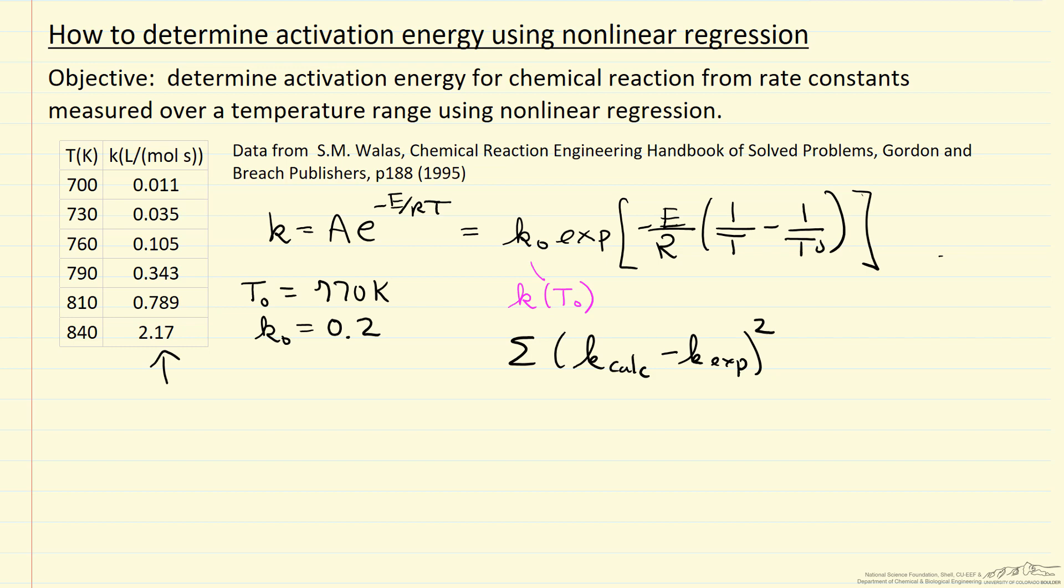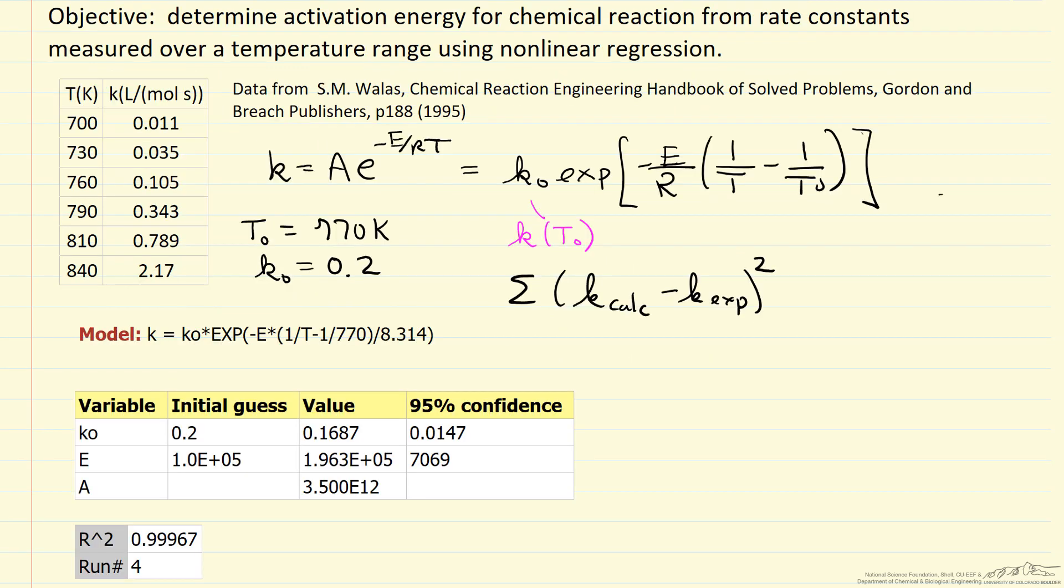Let's look at the results of carrying out this approach to determine the two parameters K zero and E. I'm showing here the output from Polymath with the initial guesses for the parameters and then the nonlinear regression values. Also the 95% confidence limits, which gives us an idea of how good a fit we have. The R squared value is very high.